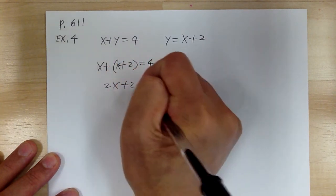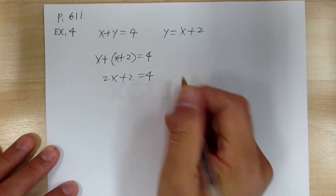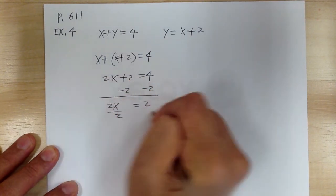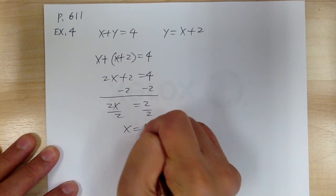So you got 2x plus 2 equal to 4. Minus 2 on each side, you get 2x equal to 2, divided by 2. So x equals 1.